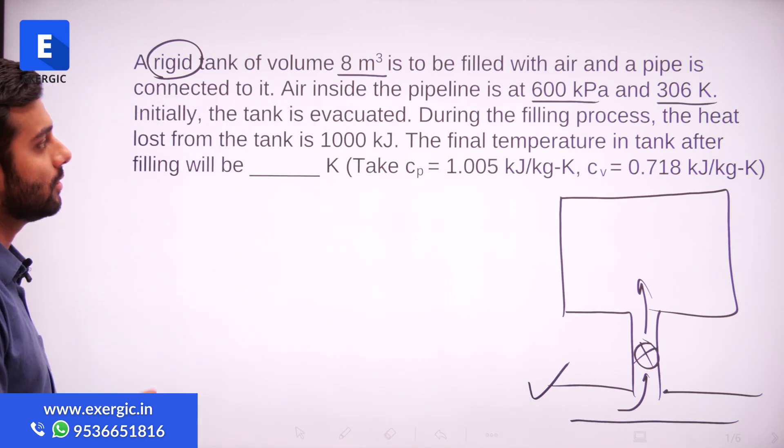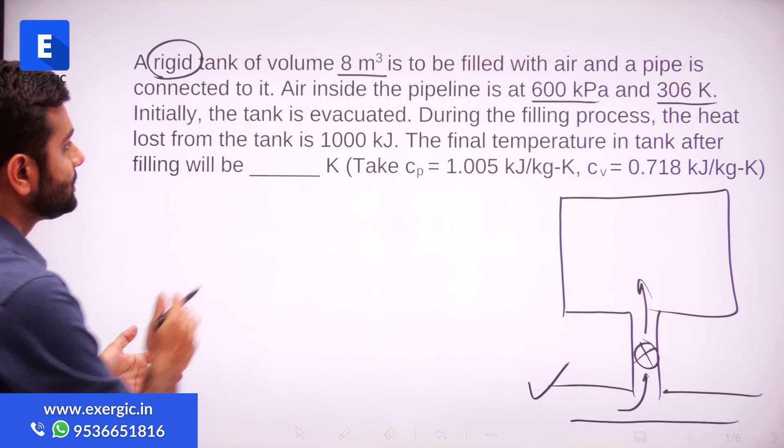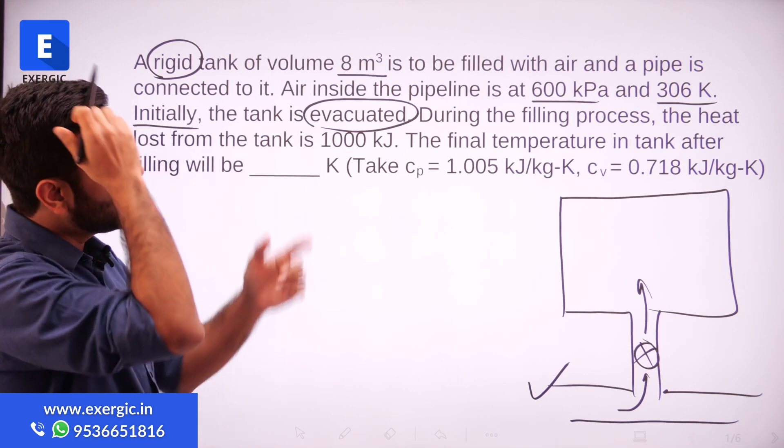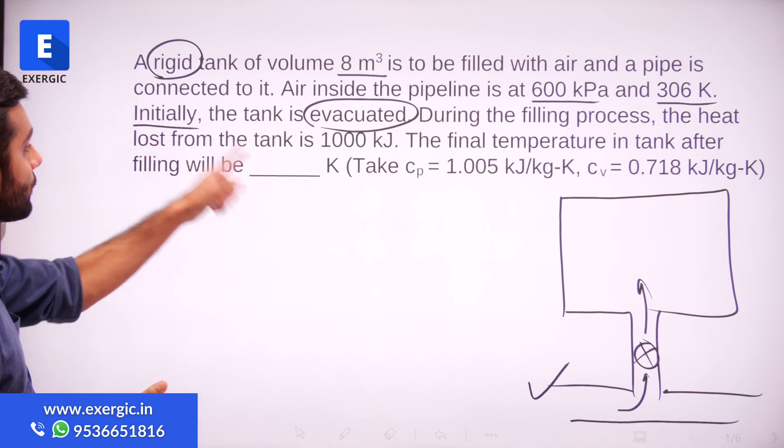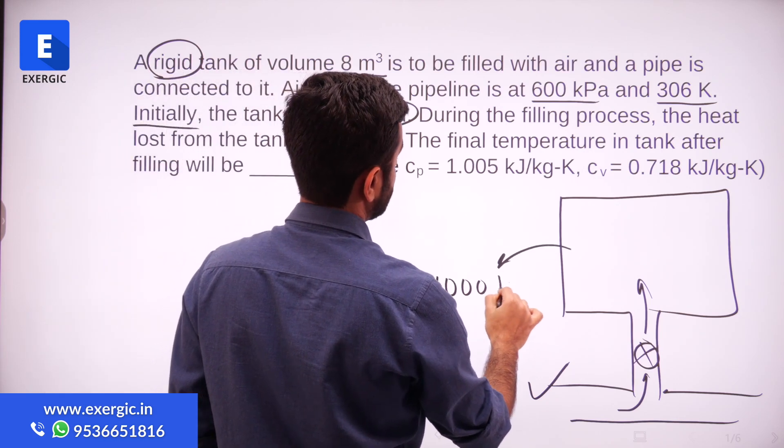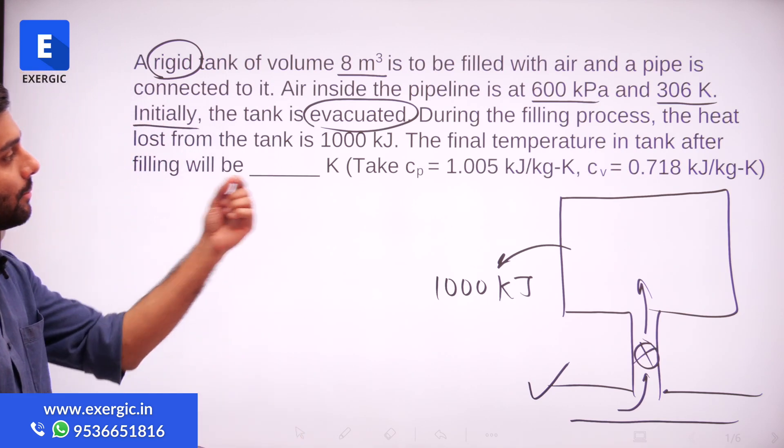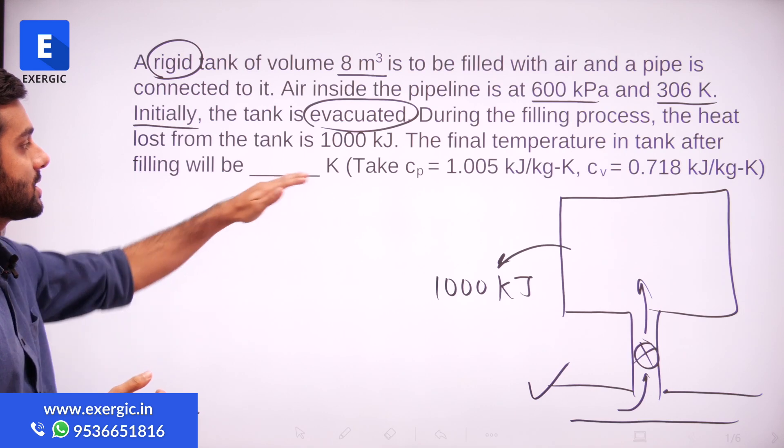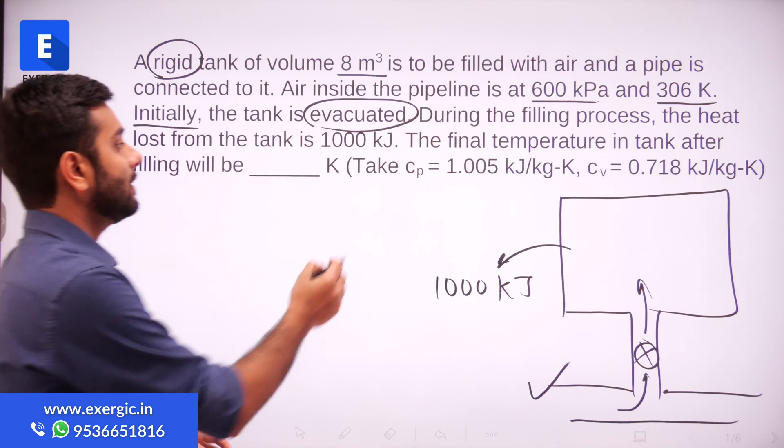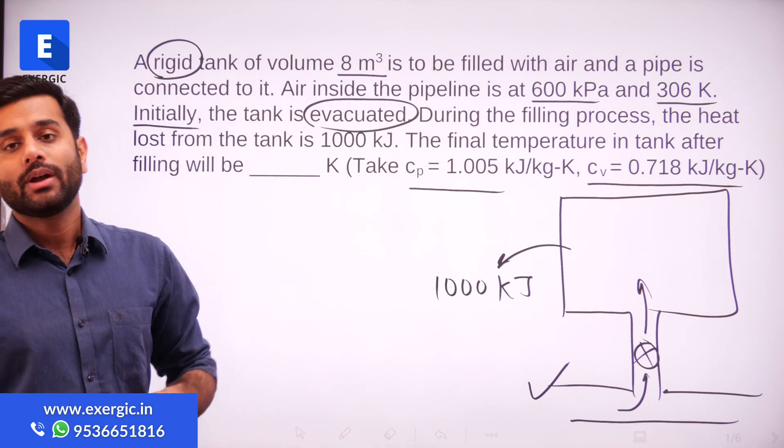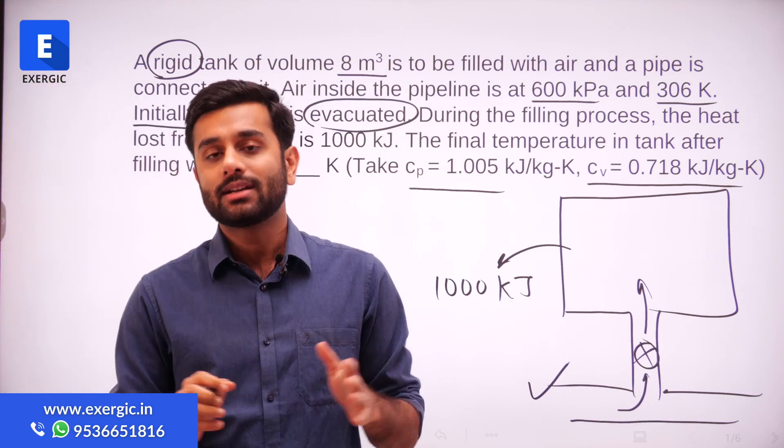One very basic but small point to note here. Initially the tank is evacuated and ultimately it will get filled. During the filling process, the heat lost from the tank is given. How much heat is lost? 1000 kJ is lost. Find the final temperature in the tank after filling is done. Cp value is given to you, Cv is given to you.